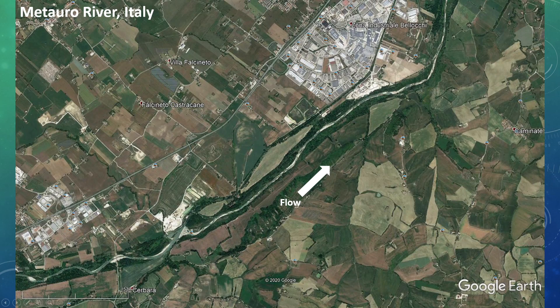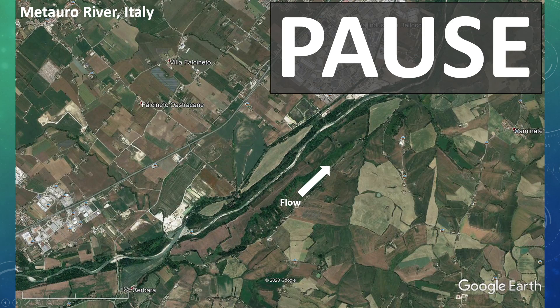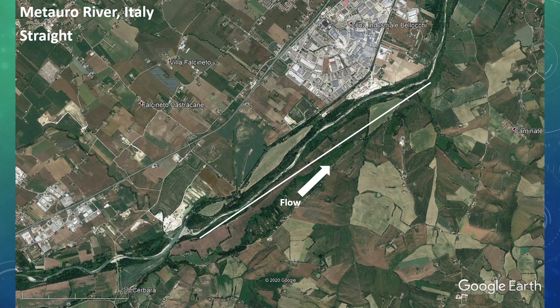Now we're going to move on to the Mataro River in Italy. Did you guess straight river? This is a straight river — a pretty thin one at that, and there is some meandering occurring within a small reach of the stream. But overall, this is a pretty straight river channel.